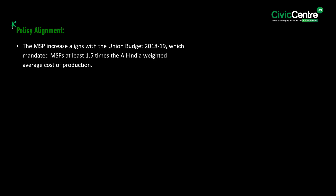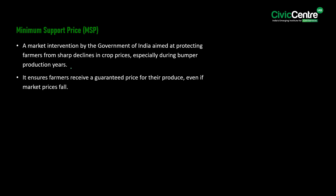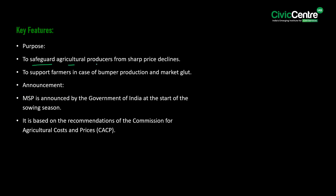The MSP increase aligns with the Union Budget 2018-19, which mandated MSPs at least 1.5 times the all-India weighted average cost of production. MSP is a market intervention by the Government of India aimed at protecting farmers from sharp declines in crop prices, especially during bumper production years, ensuring farmers receive a guaranteed price even if market prices fall.